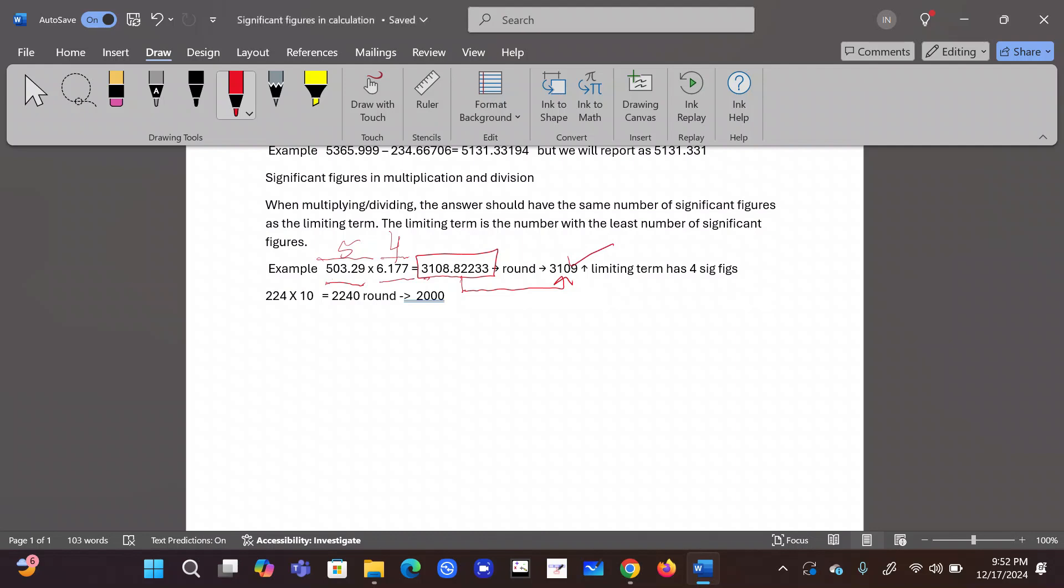Now, another example, 224 times 10. So what we see here, 224 has three significant figures. 10 is one significant figure. When I multiply 224 by 10, answer is 2240. But that's not correct when we do in science, because we have to go least number of significant figure, which is one. 2240, we have to round it off to one significant figure. 2240, it would be rounded off to 2000. So that is the correct answer.